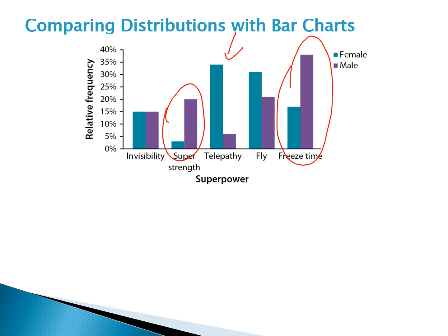With a lot of things in this class, things won't match up exactly, so there's some leeway as to what we consider the same versus different. Saying that males and females were similar in choosing the ability to fly would be fair, as would noting that more females chose it. Any time we write an answer, we want to write it in the context of the problem — about superpowers and whether males or females were choosing each one.